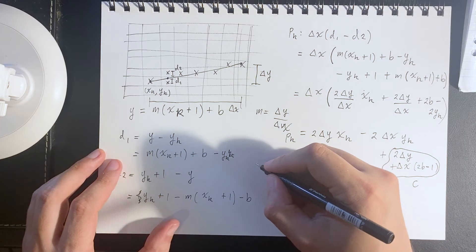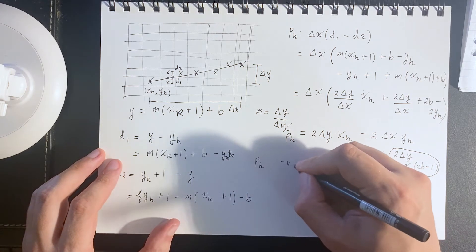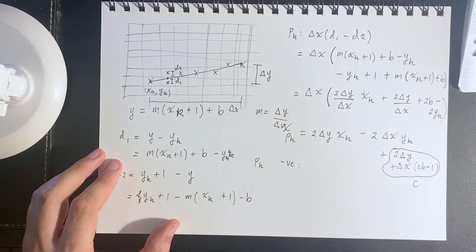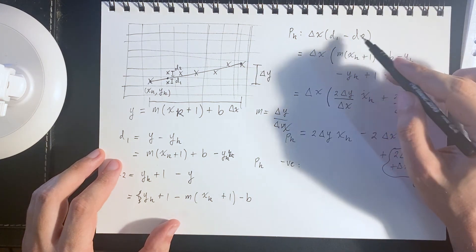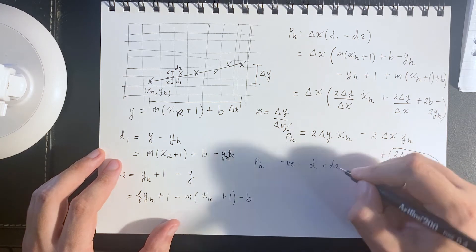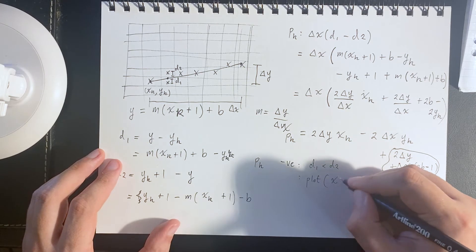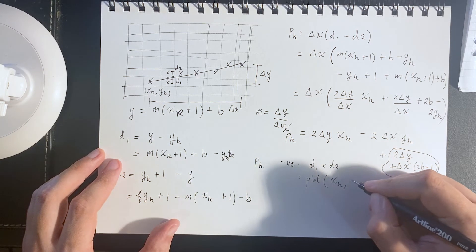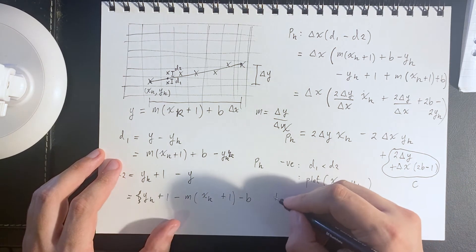It's important to say if for each p_k, if p_k is negative, then this means that distance one is less than distance two. In other words, plot x_k, y_k for the next point.